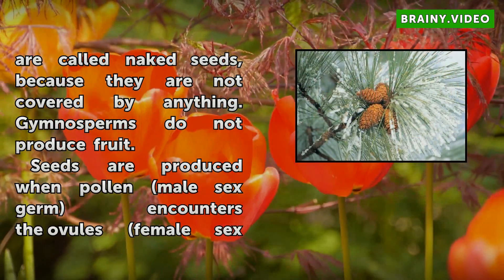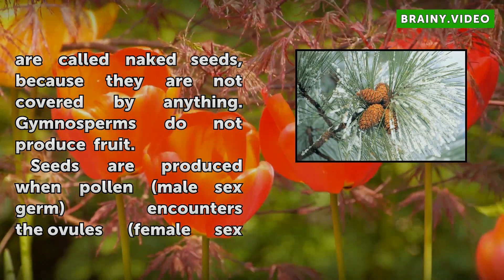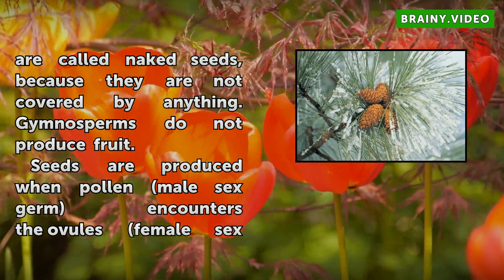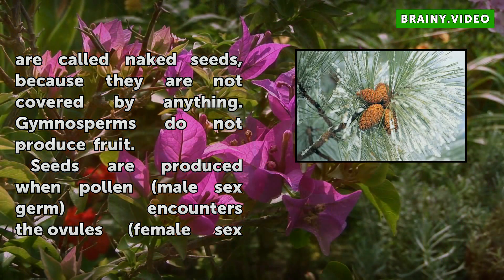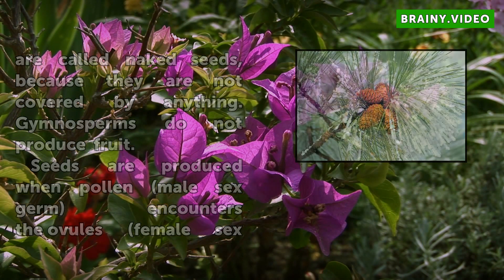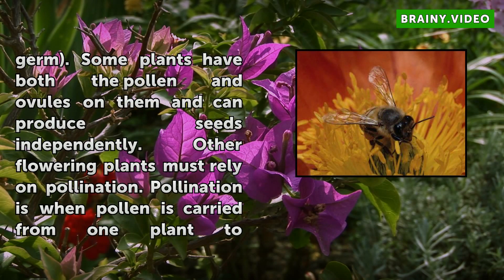Seeds are produced when pollen, the male sex germ, encounters the ovules, the female sex germ. Some plants have both the pollen and ovules on them and can produce seeds independently. Other flowering plants must rely on pollination, which is when pollen is carried from one plant to another either by the wind or by insects.